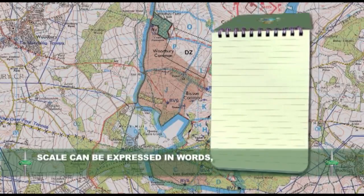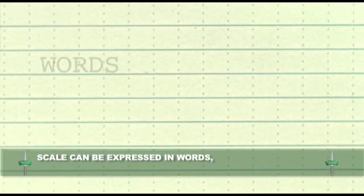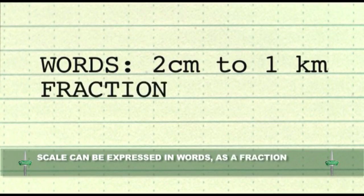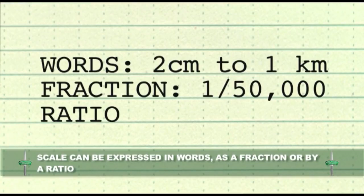Map scales may be expressed in words, for example 2cm to 1km, or as a fraction 1/50,000, or by a ratio 1 to 50,000.